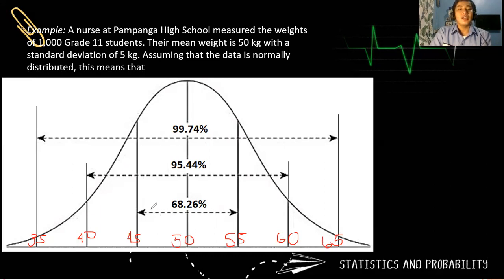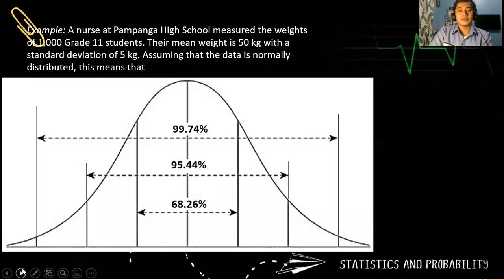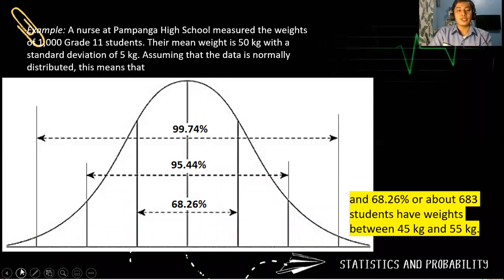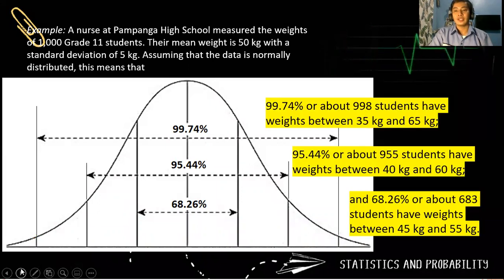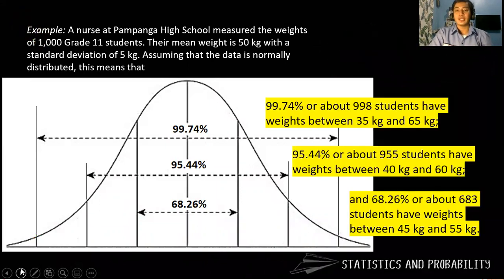So if we talk about 99.74% of 1,000, meaning almost 997 students have weights between 35 to 65 kilograms. And there are 954 students who have weights between 40 to 60 kilograms. And we have 680, almost 680 students which are between 45 to 55 kilograms. So that is the use of that distribution.